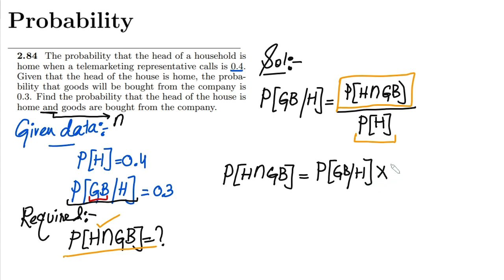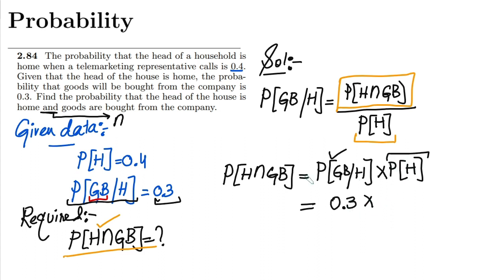P(GB|H) is given, which is 0.3, and the probability of H is also already given, which is 0.4. Multiplying them both, I get 0.12. So this is basically the probability that the head of a household is home and goods are bought, which equals 0.12.